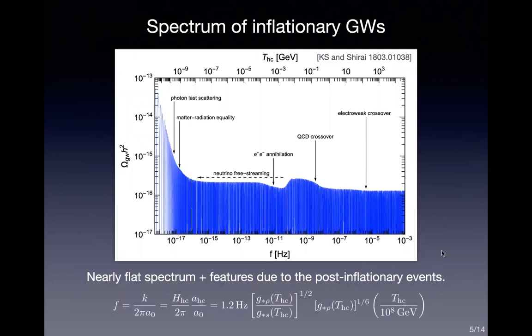This is a typical spectrum of inflationary gravitational waves predicted in standard slow-roll inflationary models. Basically this is a nearly flat spectrum, and on top of that there are some features due to various post-inflationary events. For instance, matter-radiation equality leads to a change in the equation of state, so the slope of the gravitational wave spectrum changes around that frequency. Also, e-plus e-minus annihilation and the QCD crossover lead to changes in the effective degrees of freedom, which show up as breaks in the gravitational wave spectrum.